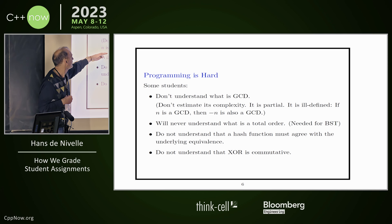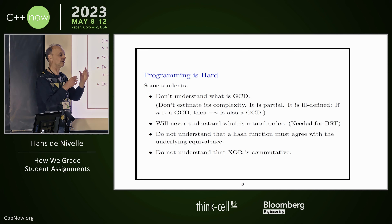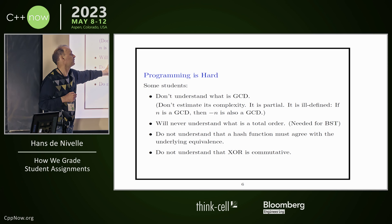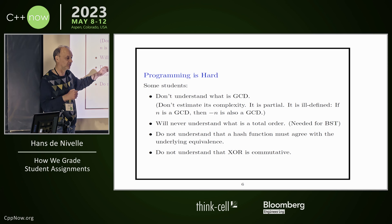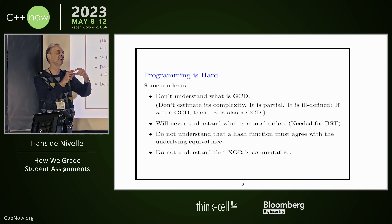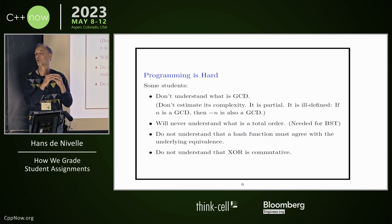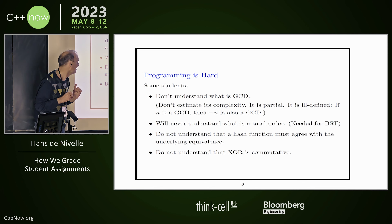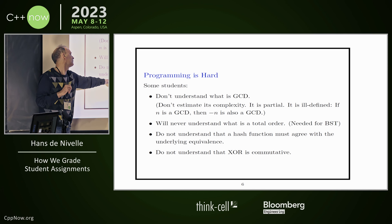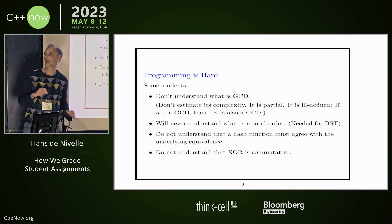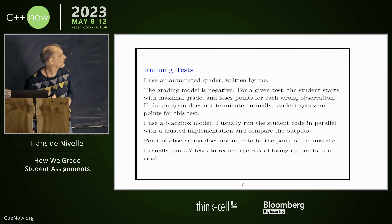Students will never understand what a total order is. It's also hard to understand what a hash function is. You have a notion of equality, and your hash function must agree with this equality — students have problems with that. For example, there are students who don't understand that XOR is commutative, and then they come up with all kinds of creative solutions for how to compute XOR.